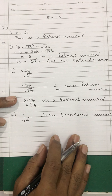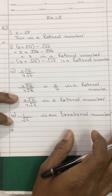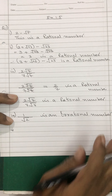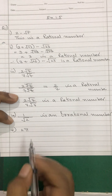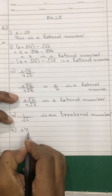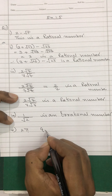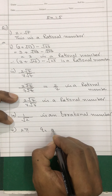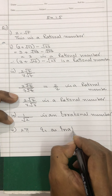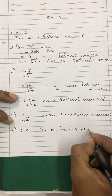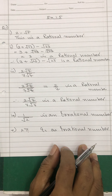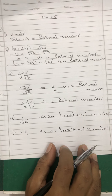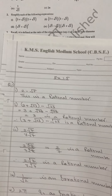So with question number 1 done, we now go to question 3 — the fifth expression is 2π. Here, 2 is a rational number and π is an irrational number. So this is also an irrational number. With this, we finish question number 1 and move to question number 2, which asks us to simplify each of the following expressions.